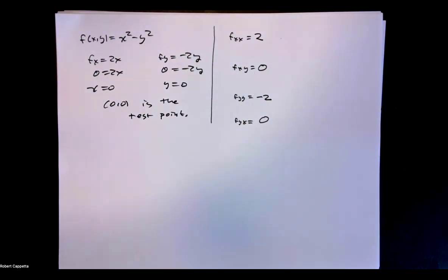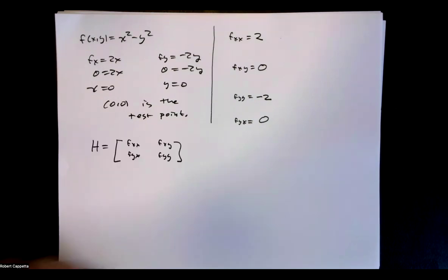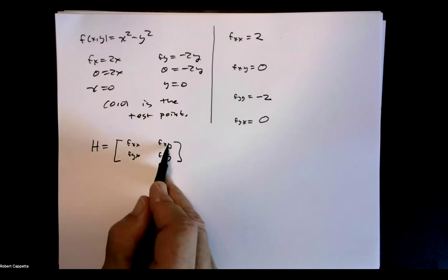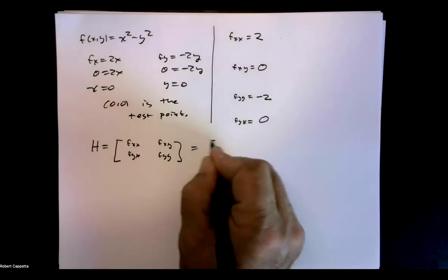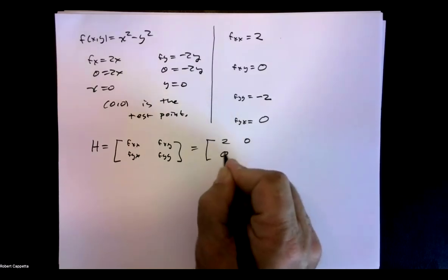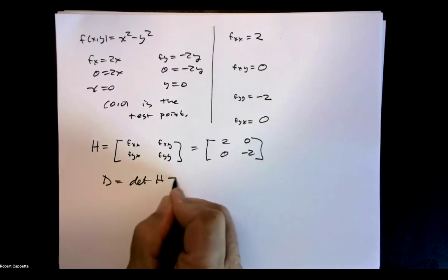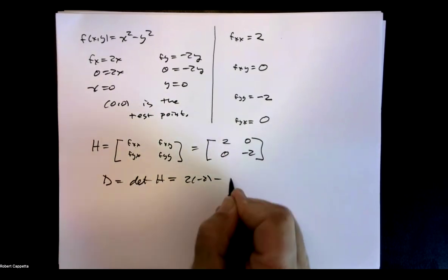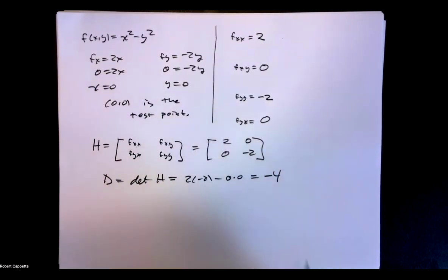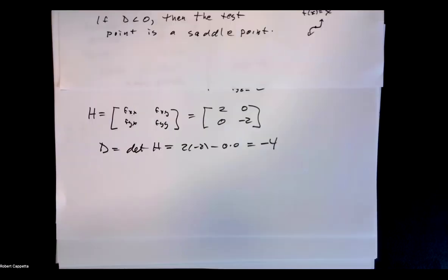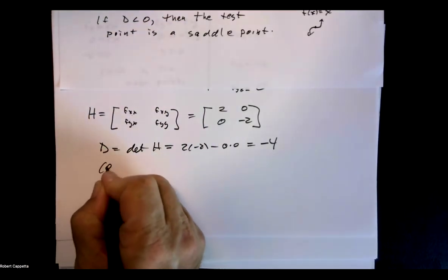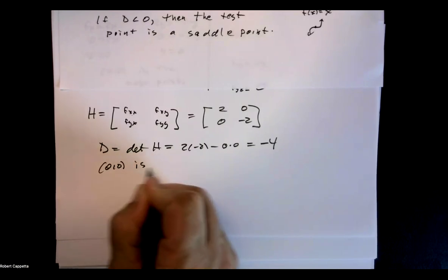Typically, f sub x, y and f sub y, x will be the same. Now let's construct our Hessian matrix with entries 2, 0, 0, negative 2. D is the determinant of H, which is 2 times negative 2 minus 0 times 0, or negative 4. So what does that tell me? We said previously that if D is less than 0, then the test point is a saddle point. So I conclude that (0, 0), my test point, should be a saddle point.